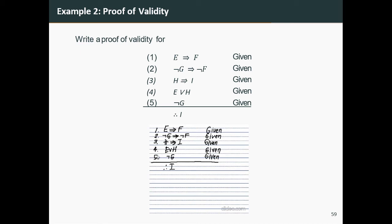For this example, we can use statement five and statement two to conclude not f. The reason is modus ponens applied on statements two and five. Next, we can use statement one and statement six to conclude not e. The reason is modus ponens applied on statements one and six.